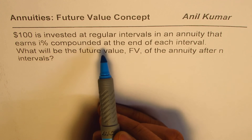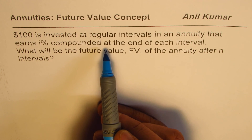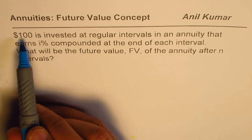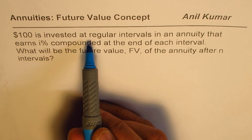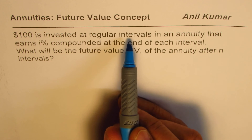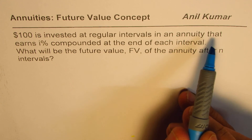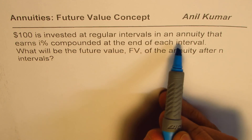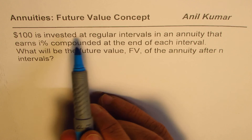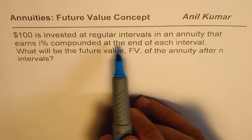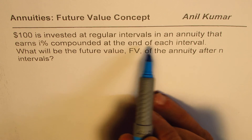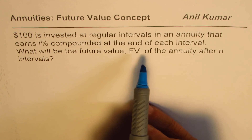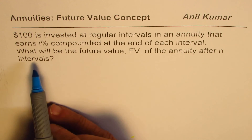Instead of specifying five percent or ten percent, or a compounding period of yearly, bi-weekly, weekly, or daily, we are keeping it general. $100 is the amount invested at regular intervals — that means it's an annuity — earning I percent compounded at the end of each interval. The deposit is made at the end of the interval, and compounding of interest is also done at the end of each interval. This will give us the general formula.